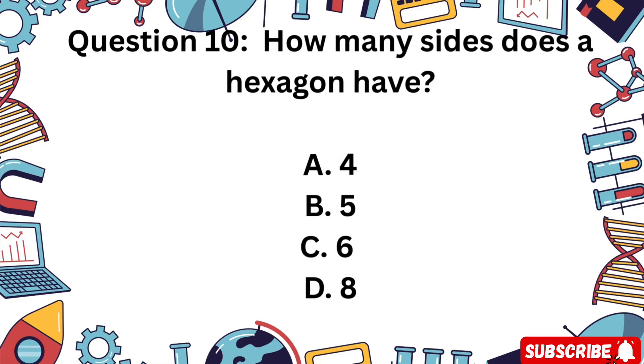Question 10: How many sides does a hexagon have? Is it A 4, B 5, C 6, or D 8?